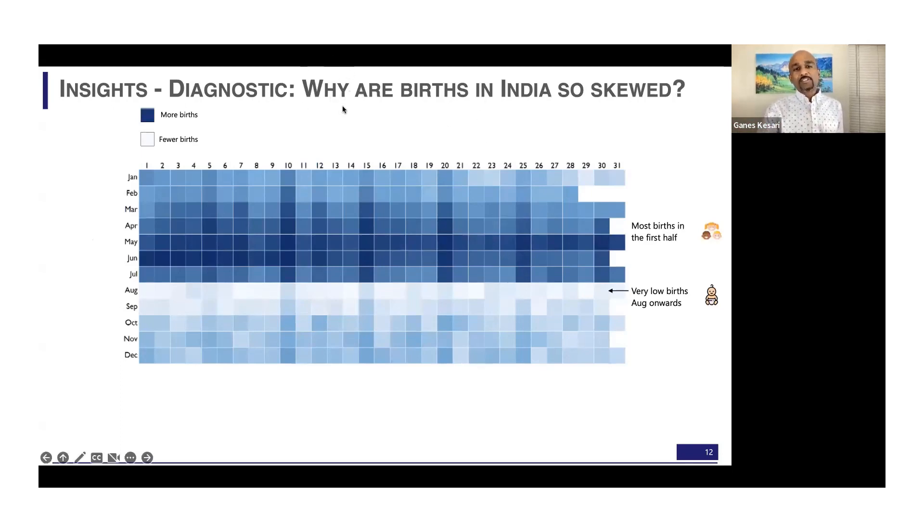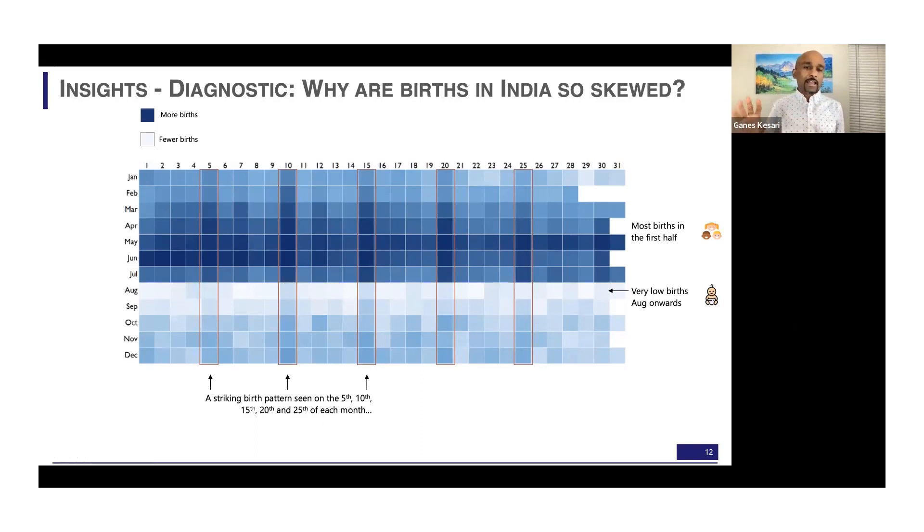Now we went about asking the second question: why are the births so skewed? So now we're getting into the why question, which is diagnostic analytics or diagnostic insights. This is the second advanced level of analytics. So here we do fraud analytics. We started seeing a few patterns. If you look at the 5th, 10th, or 15th, the round number dates, there is a striking birth pattern where there's a high number of births on these dates. It's unmissable, and statistics says that when you notice patterns like this, there is an external influence. It cannot be natural random data. So we knew that something was happening behind the scenes.